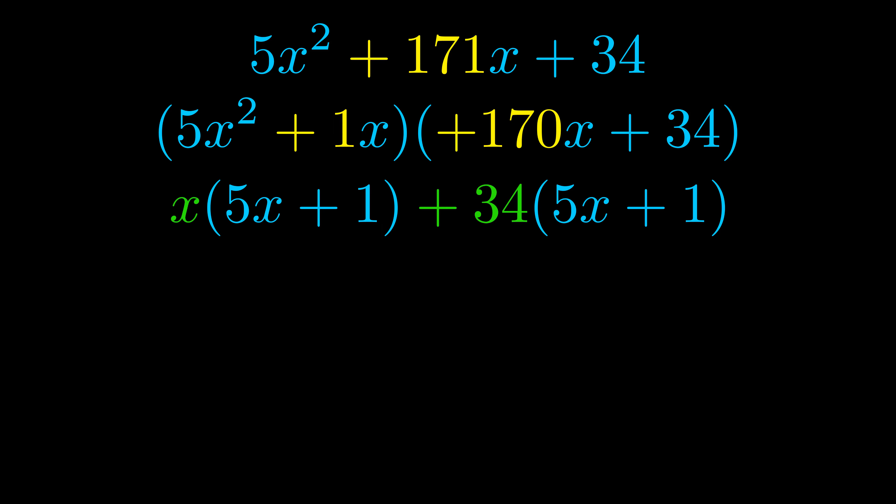Notice also how what remains inside of the parentheses is the same in both cases. The blue values are the same. Those blue values will become one of our factors and we will combine the two green values, the GCFs that we pulled out, to get the other one.